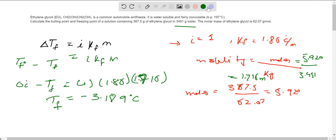Minus 3.189 degrees Celsius. Now following the same procedure we calculate the boiling point, which is 100.891 degrees Celsius. These are our two answers.